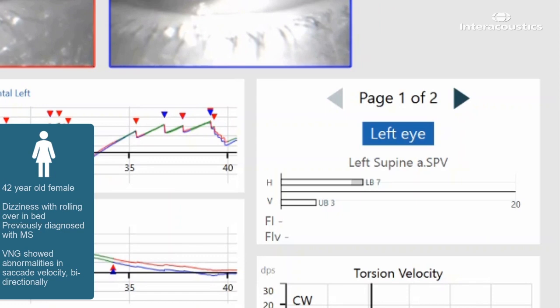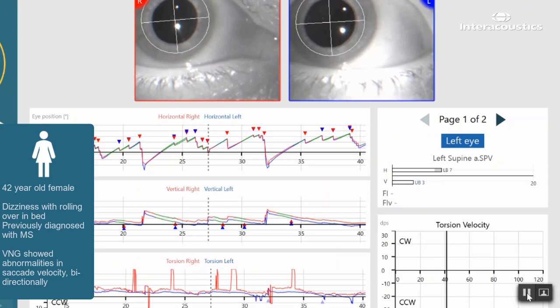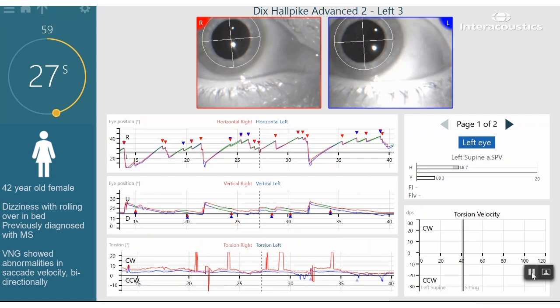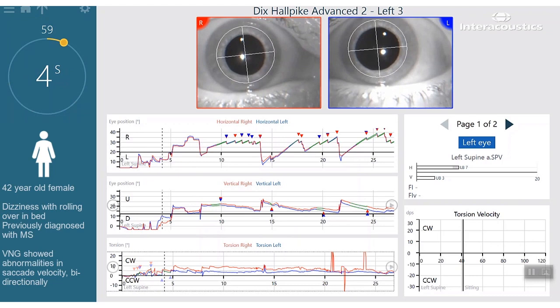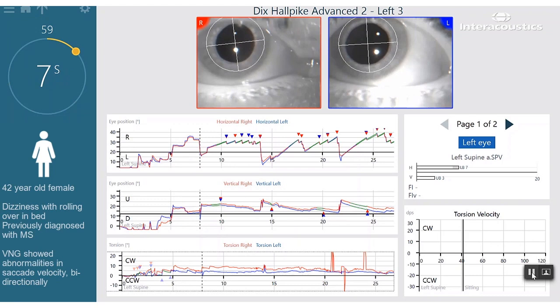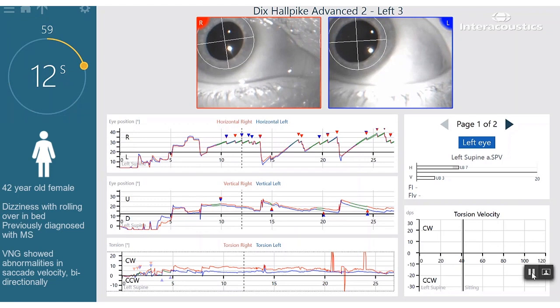Upon inspection of those graphs only, you may be inclined to believe this patient had a mild left posterior canal BPPV. Yet if we play the video and look at the torsion trace and torsion velocity graph, you can see that there are no identified beats of torsional nystagmus. The lack of torsion in this case helps the examiner avoid a misdiagnosis. This patient was actually diagnosed with central positional vertigo, as evidenced by horizontal and vertical eye traces along with no visible torsional nystagmus, highlighting the benefit of recording all three components of eye movement.